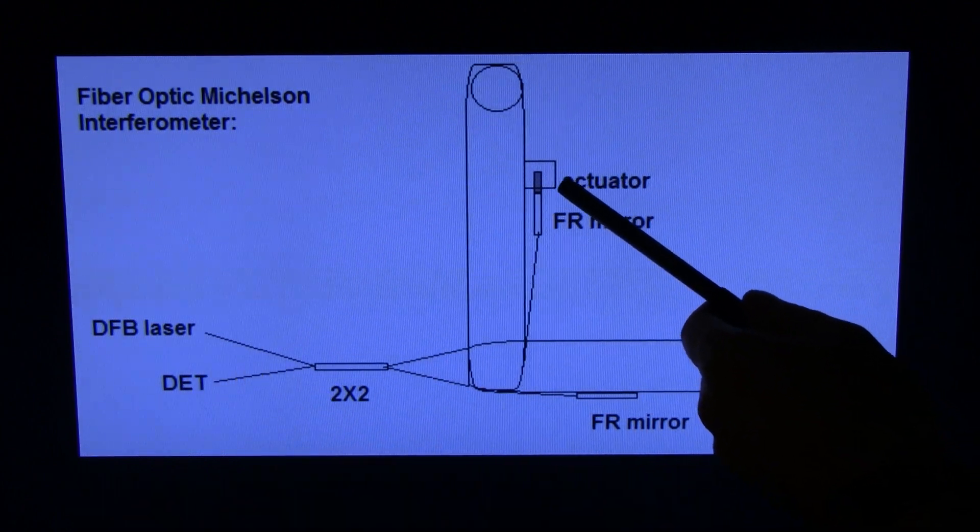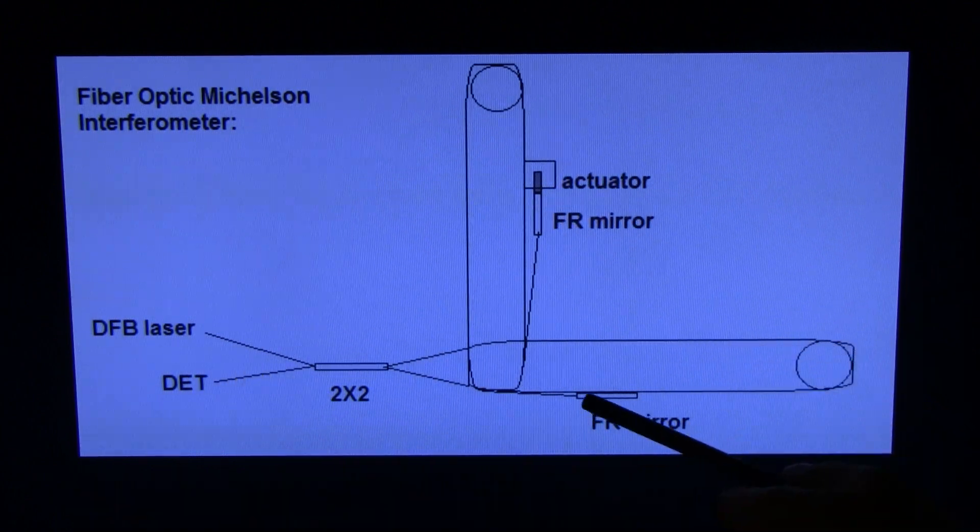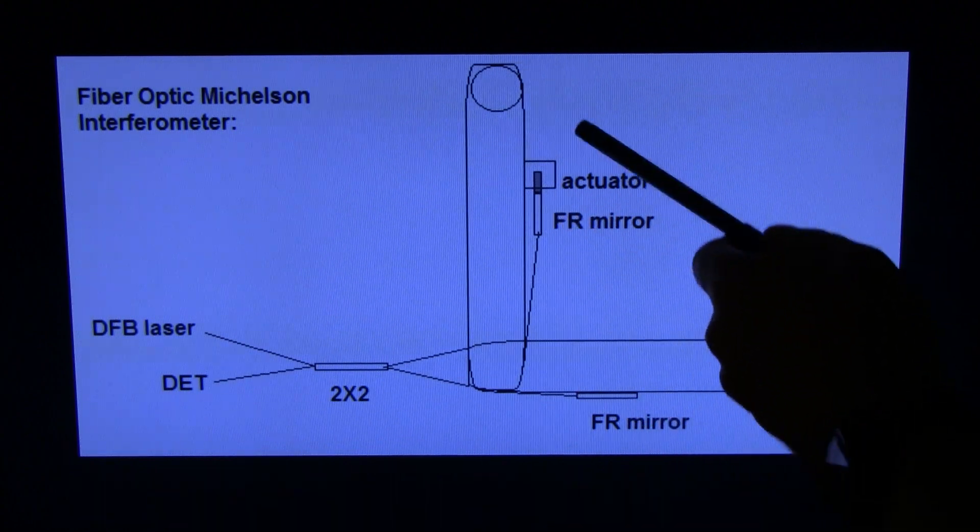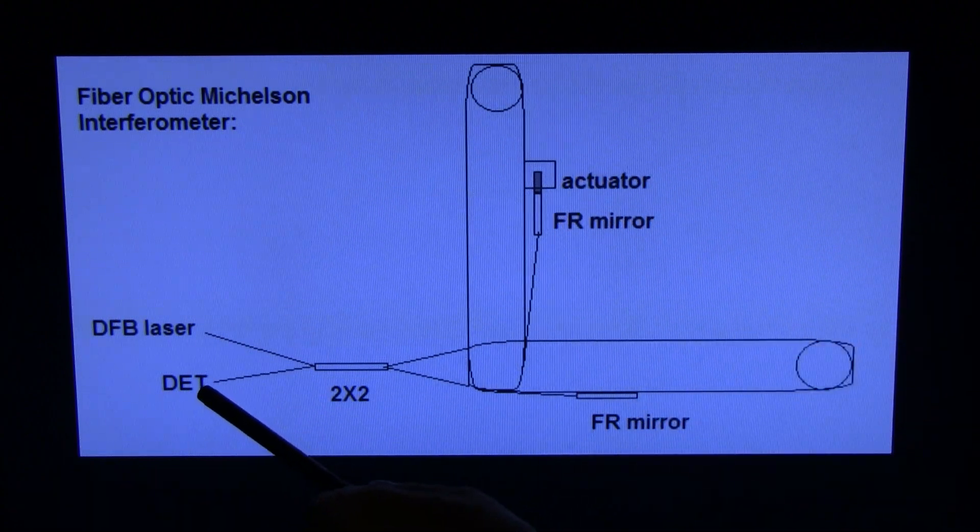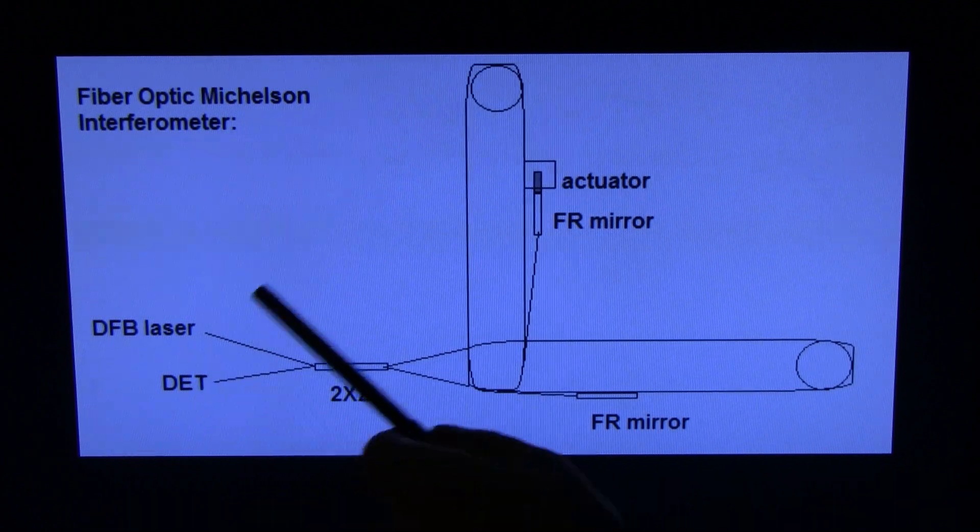We're also going to have our actuator attached to this mirror, this one will stay stationary, so this one will be pulled back and forth to generate our AC signal between the two beams at our detector.